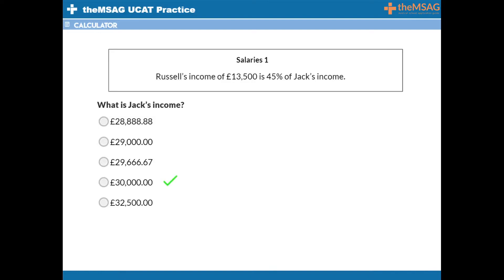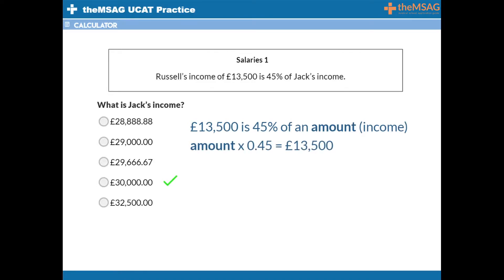You don't need to test every solution. £13,500 is 45% of an amount — think of this as an amount multiplied by 0.45 to become £13,500. To reverse this, divide £13,500 by 0.45. This will tell you what the large amount is. £13,500 — or just £135 if you're in a rush — divided by 0.45 gives you £30,000.